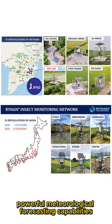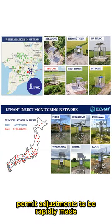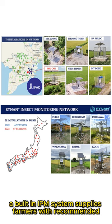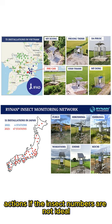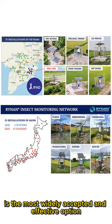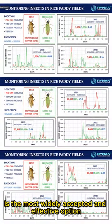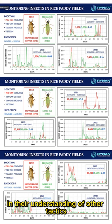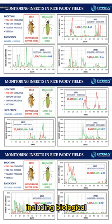Powerful meteorological forecasting capabilities permit adjustments to be rapidly made based on changing weather, planning according to thresholds. A built-in IPM system supplies farmers with recommended actions if the insect numbers are not ideal. Implementation of IPM tactics: while primarily chemical control is the most widely accepted and effective option, old-generation farmers are also sophisticated in their understanding of other tactics, including biological, mechanical, and cultural control.